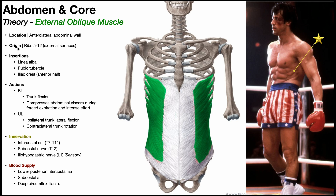The origin of the external oblique muscle is the external surfaces of ribs 5 through 12. Looking at this picture, up at the top is rib number 1, then rib 2, 3, 4, and here's 5. You can see the origin of the external oblique off of that, and it would have an origin on all the ribs down to number 12. The insertions of the external oblique, in general, have to do with this white tissue — this aponeurosis.